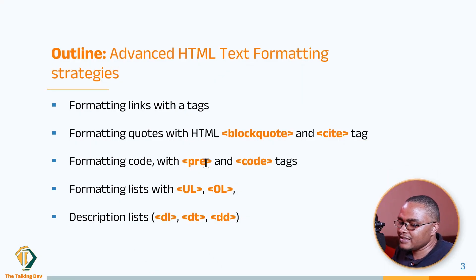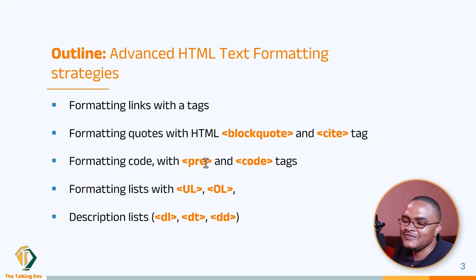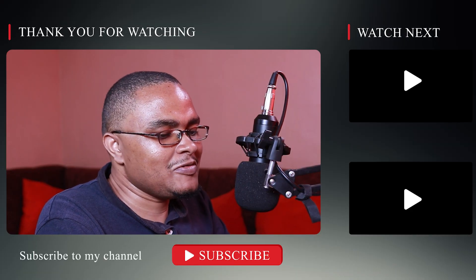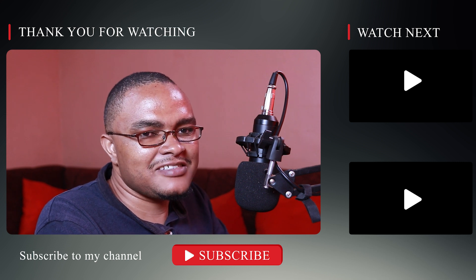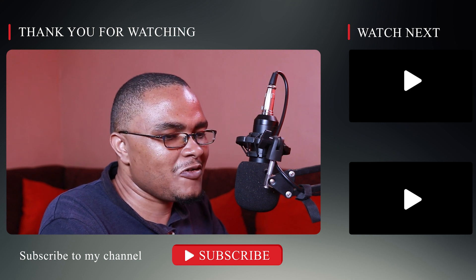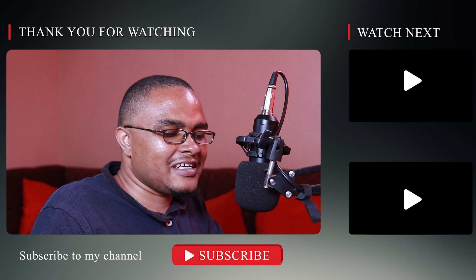To summarize: we've seen how to do anchor tags (we had a bug there but fixed it), blockquote and cite tags, the pre-tag and code tag, ordered and unordered lists, and the description list with an example. In the next video we'll talk more about how to format images and videos and use those advanced elements — moving a little bit away from text formatting. Take care and see you there.